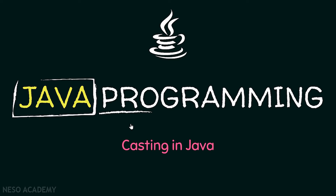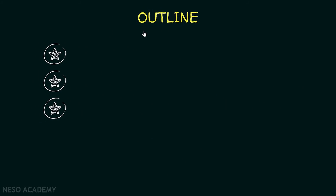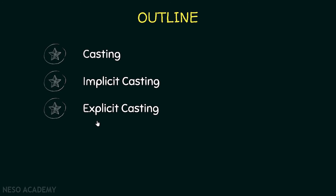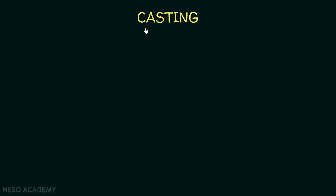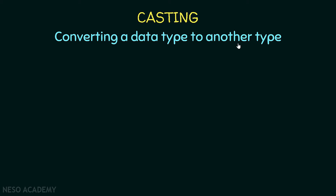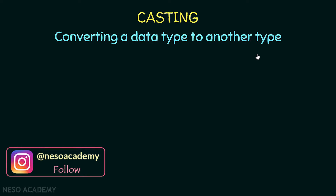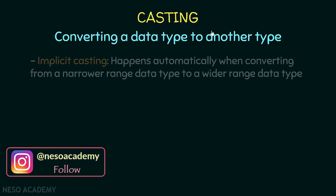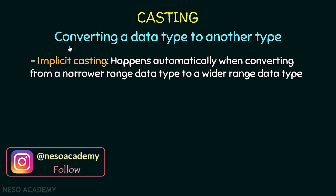Hello friends and welcome back. In this lecture we will talk about casting in Java. Our outline covers what casting is, implicit casting, and explicit casting. Casting is converting a data type to another type — for example, converting an integer to a double or a double to an integer.